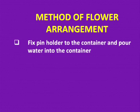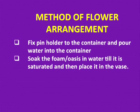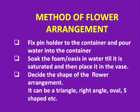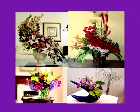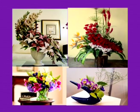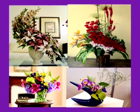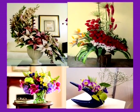The method for flower arrangement: first, fix the pin holder to the container and pour water in. Soak the foam or oasis in water till saturated, then place it in the vase. Decide the shape of the flower arrangement — it can be a triangle, right angle, oval, S-shape, circular, and many more. This picture shows some flower arrangements, illustrating the shapes and different lines used to enhance beauty.